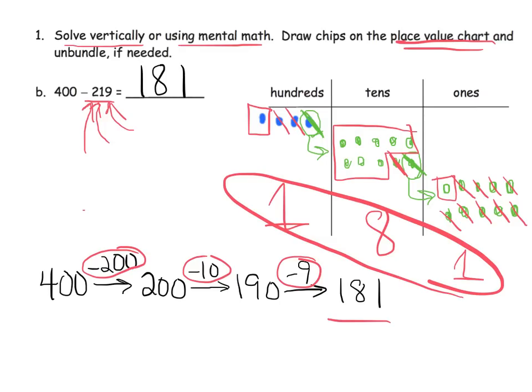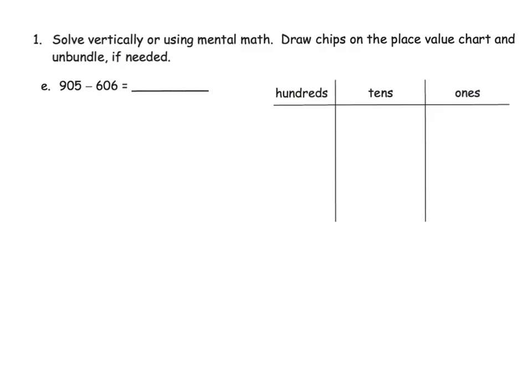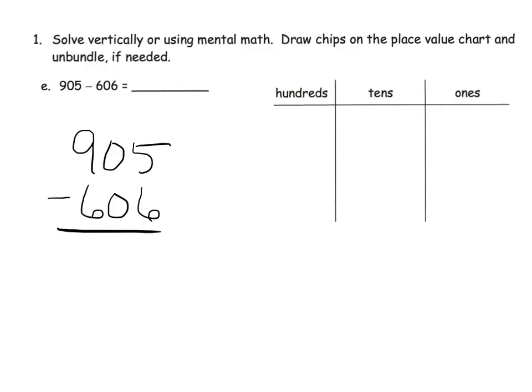For the next problem we'll practice the standard algorithm. We're doing 905 minus 606. Teachers and parents, you could give students a choice: do the vertical method first and verify with the place value chart, or if students are still in the concrete stage, do the place value chart first. Differentiate based on where each student is developmentally.